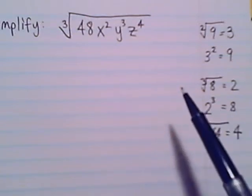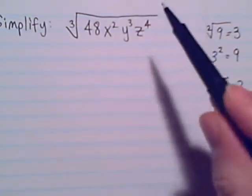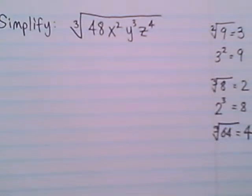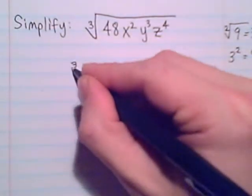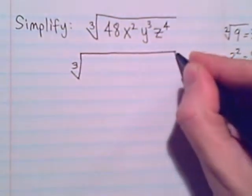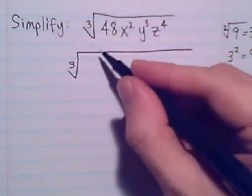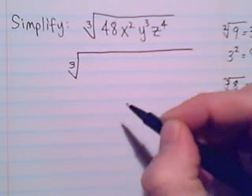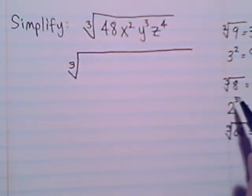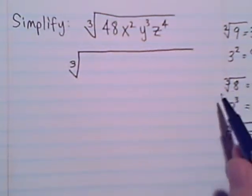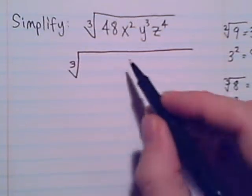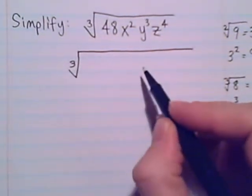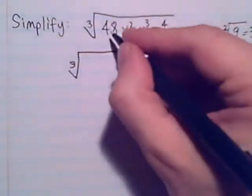Now, how we had a way of looking at prime factors, and if we found it in a pair, we would bring it out of a square root. We've got a nice, similar approach for cube root. We'll look for prime factors, but if we see it in a set of 3, we can bring it out of a radical. That's our way of simplifying a cube root. It needs to be something to the third power. So we would need to see 3 of them inside the radical.